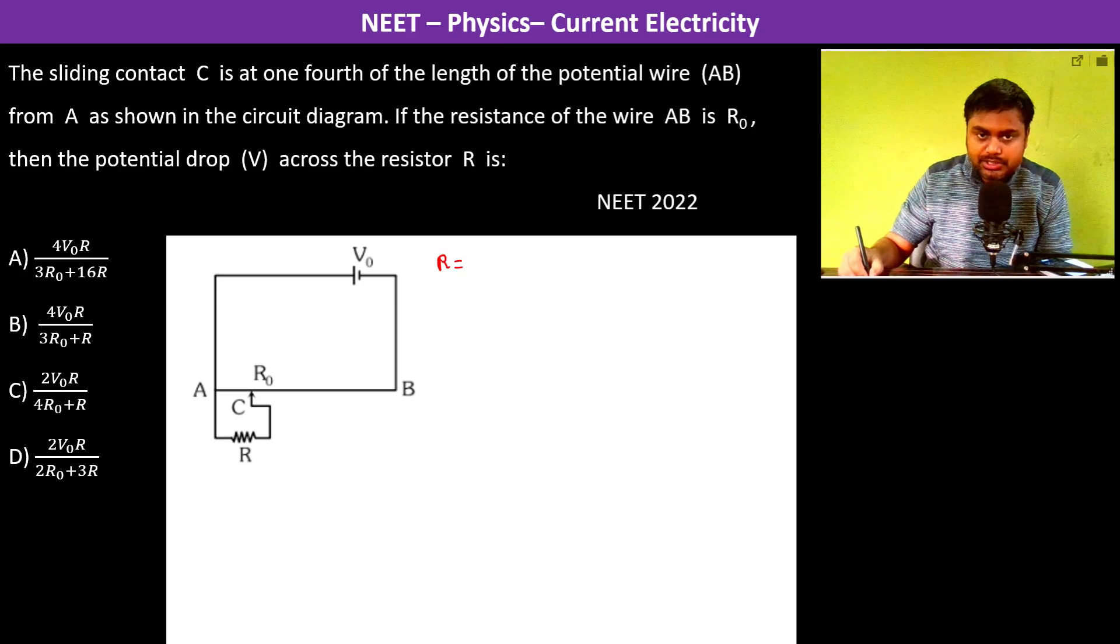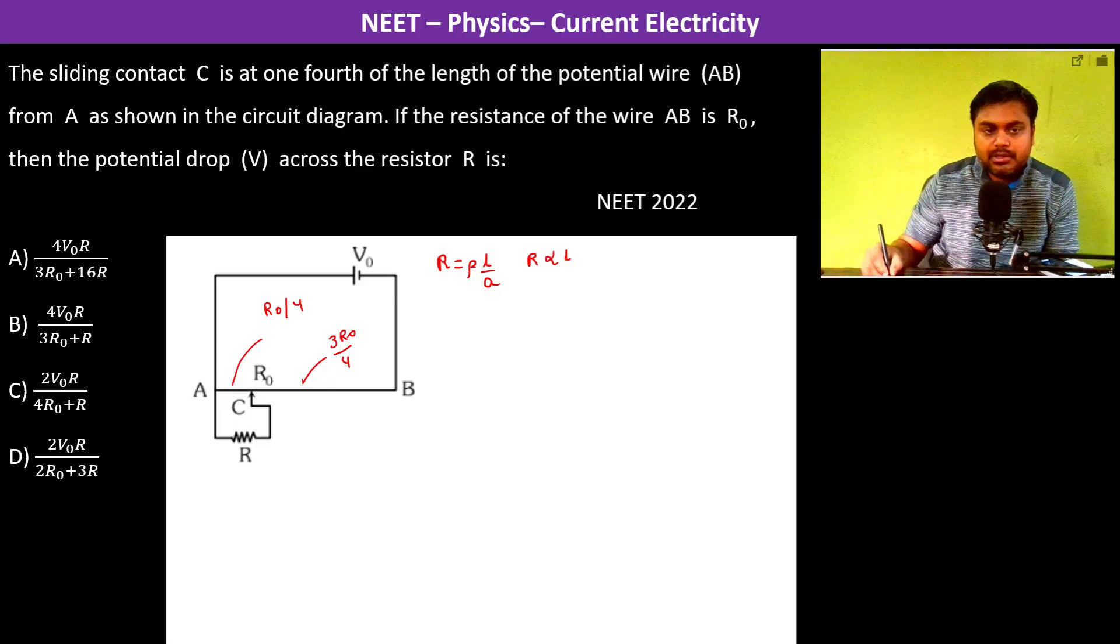Since resistance R equals rho into L by A, resistance is proportional to the length. Now this is our L by 4, so therefore here the resistance will be R0 by 4. Resistance here will be 3R0 by 4, and here it is already R. So resistance across AC is going to be R0 by 4.